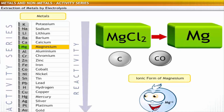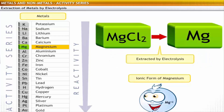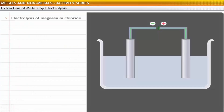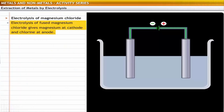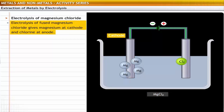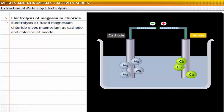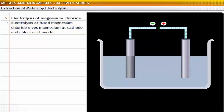Therefore, magnesium is extracted by electrolysis. Electrolysis of fused magnesium chloride gives magnesium at the cathode and chlorine at the anode. During the reaction at the cathode, the reduction of magnesium chloride occurs due to gain of electrons.